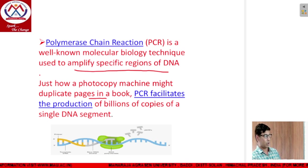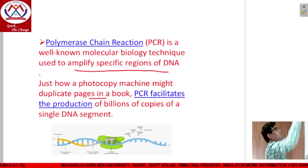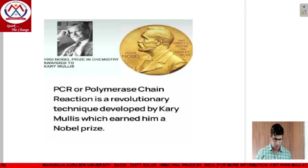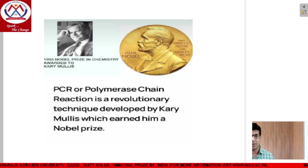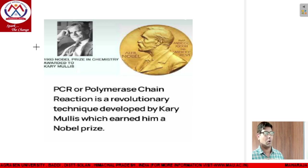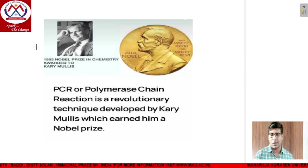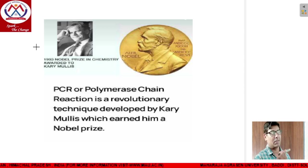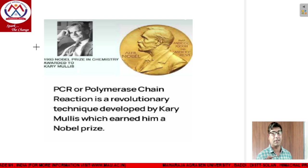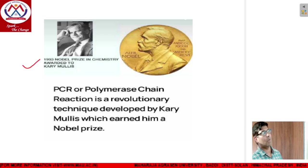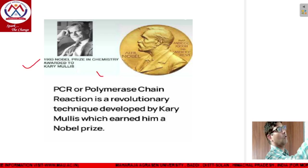Now talking about the procedure of the PCR reaction, that includes the discovery of the PCR reaction, applications, and different kinds of PCR. PCR was discovered by the famous Kary Mullis, a biochemist from the USA, who got the Nobel Prize for that in 1993. Here is a picture of Kary Mullis and the Nobel Prize.